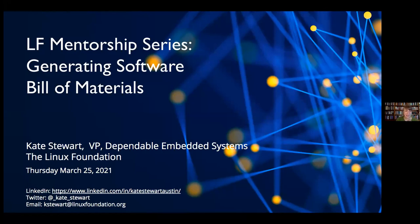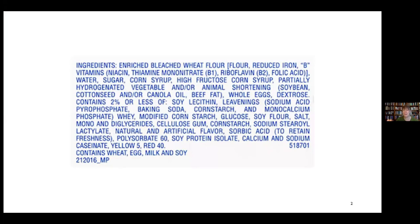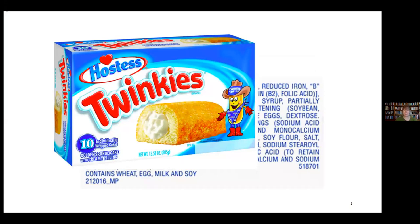What we're going to be looking at today is what is a software bill of materials. The easiest analogy that seems to work for most people is it's effectively the ingredient list. When you have things that have ingredient lists, you might look at something like a Twinkie and think that's going to be fine, vegetarian - but there might be beef fat in there. Software bill of materials does the same sort of thing for the software running on your systems, as well as what you might want to import into systems to make products from.